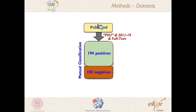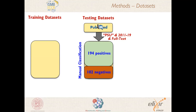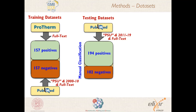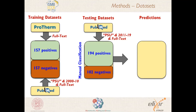We took these positive and negative articles as our testing datasets. As training datasets, we took articles from ProTherm as the positive items, and as negative items we retrieved articles from PubMed which would resemble the negatives of our testing datasets — using the same PSU keywords for searching abstracts but restricting to a different time range. After the training phase, we performed the blind prediction on our testing datasets.